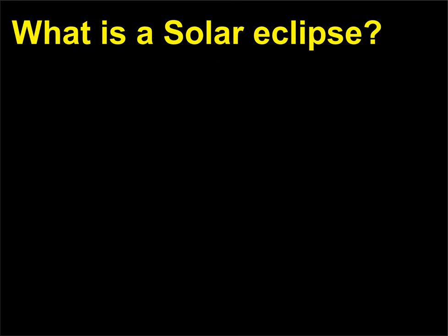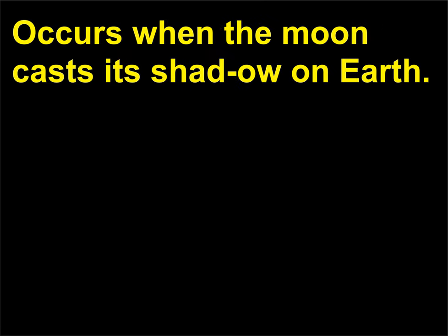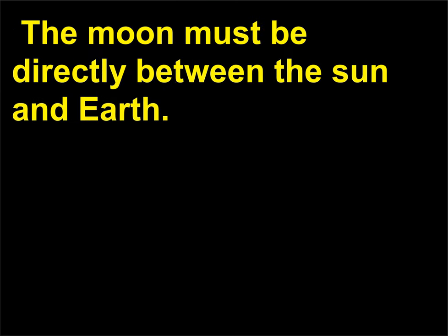What is a solar eclipse? A solar eclipse occurs when the moon casts its shadow on Earth. The moon must be directly between the Sun and Earth.